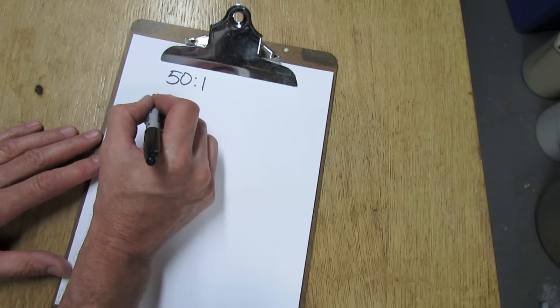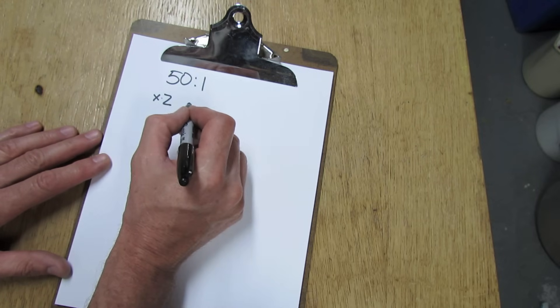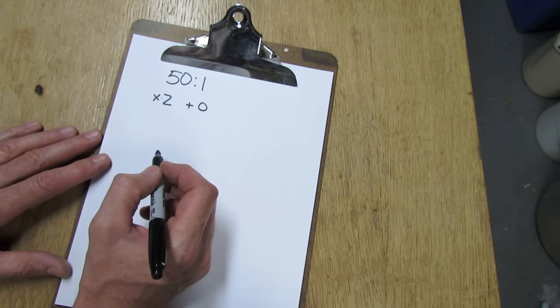First of all, what we're going to do is we're going to multiply by 2 and then you're going to add a 0 to the end of that number.